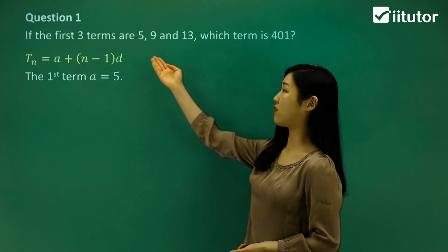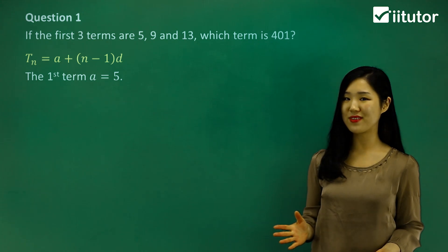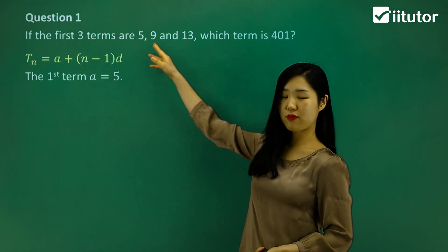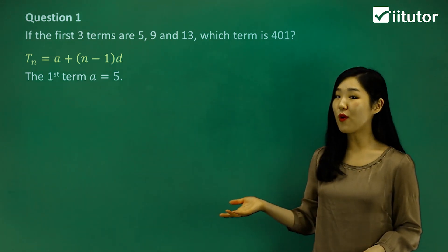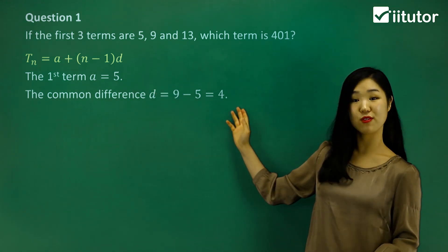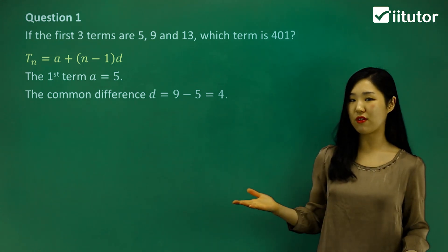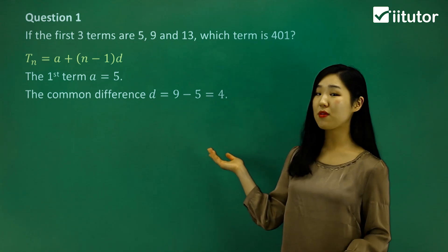They give us that 5 is the first term, so a is simply 5. That was pretty simple. Now the common difference: 5 plus what is 9? 9 plus what is 13? They're all 4. Another way you can find it is simply doing 9 minus 5, which I did here, and it was 4. Or 13 minus 9, which is also 4. So that's the common difference. I found that really easily. I know what the first term is and what the common difference is.